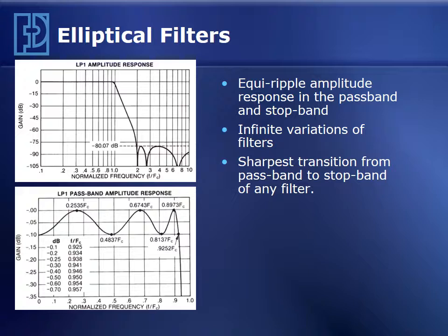Elliptic filters have equiripple amplitude response in the passband and equiripple response in the stopband as well. As a designer, you can specify the precise amount of passband ripple you want and the amount of stopband attenuation you want. A unique filter characteristic is defined by the passband ripple and stopband ripple given the number of poles, so you have an infinite number of possibilities for elliptic filters. The uniqueness of an elliptic filter is that it has the sharpest transition from passband to stopband of any filter.